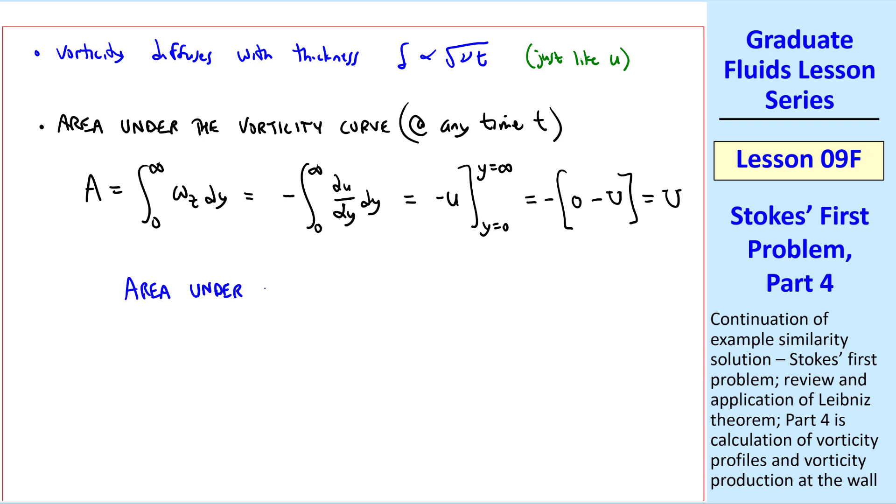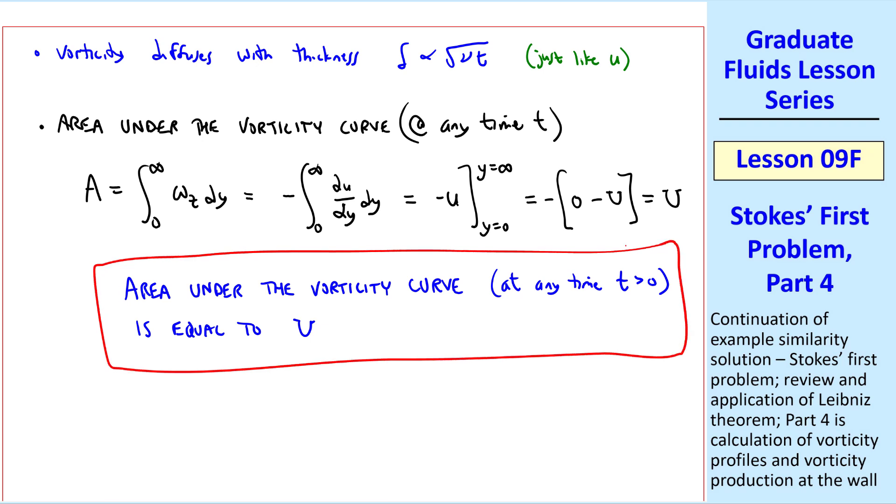We can state then that the area under the vorticity curve at any time greater than zero is equal to capital U. Where U is the speed at which the wall impulsively started. In other words, the total integrated vorticity is a constant equal to capital U. And with this, we are finally finished with Stokes' first problem.